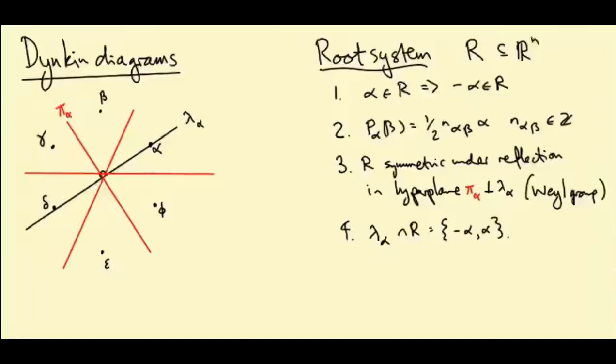We've now introduced the notion of a root system, which is a finite set R in Rⁿ, and it satisfies a bunch of axioms. Those axioms are supposed to encapsulate what it means to be the root diagram of a semi-simple compact Lie group.